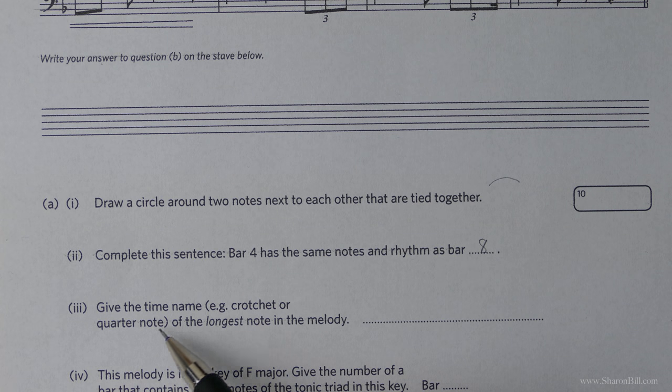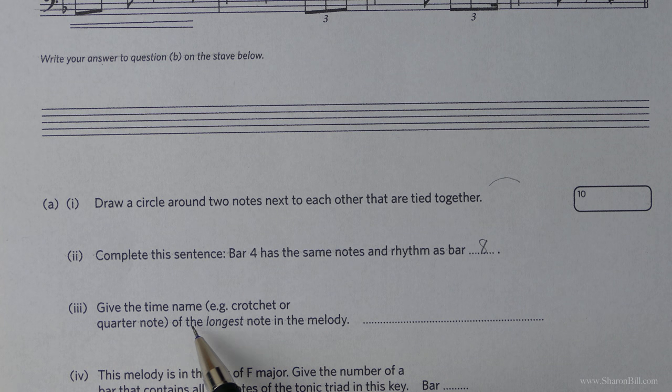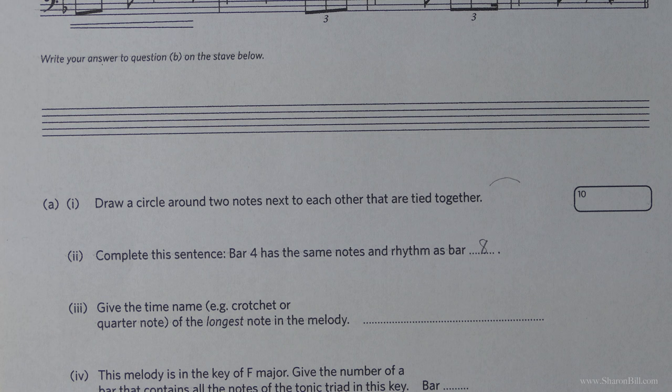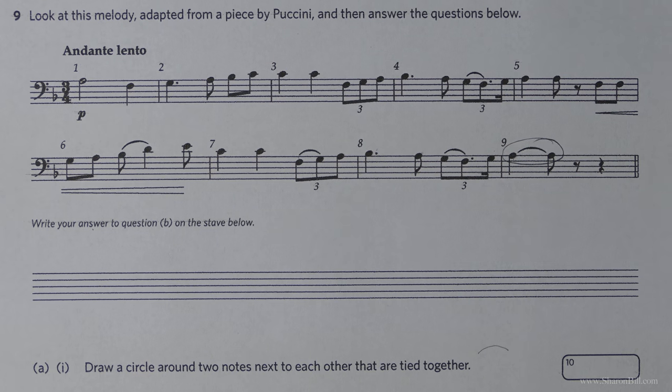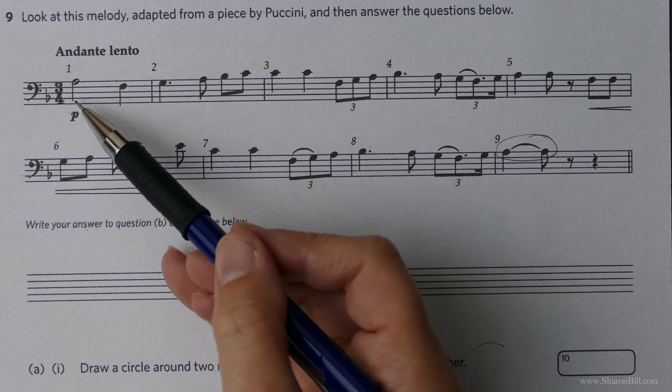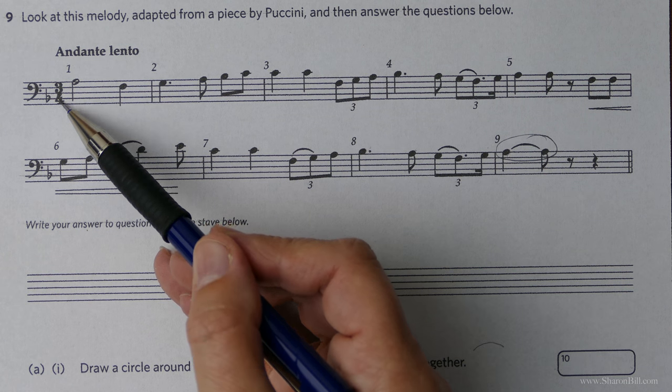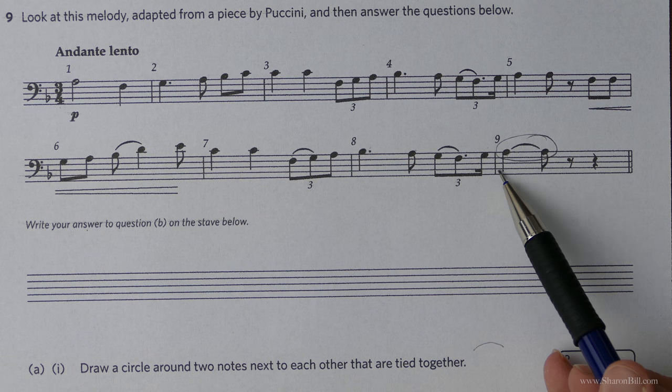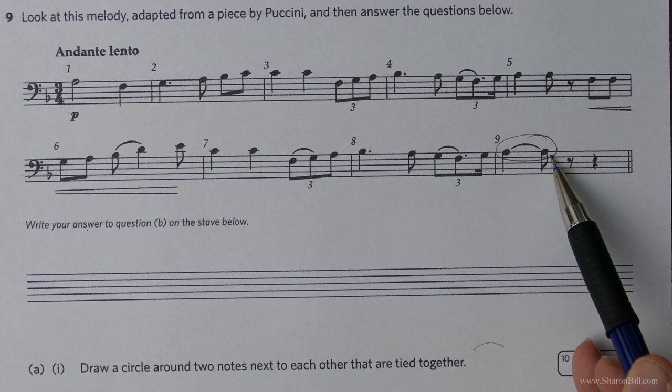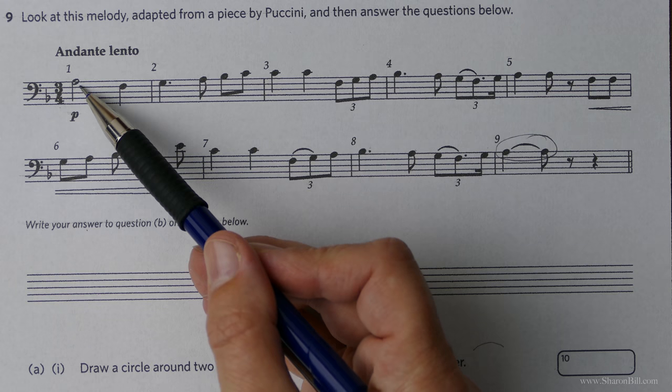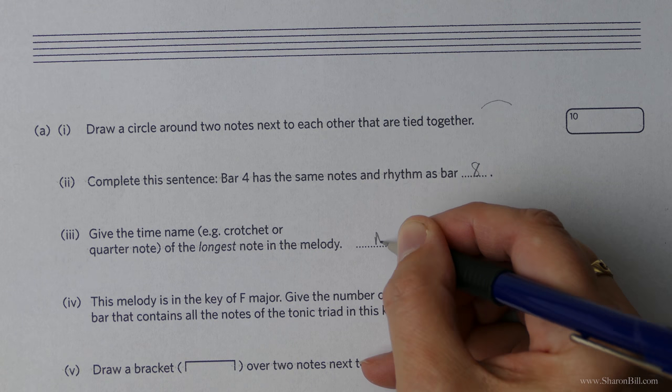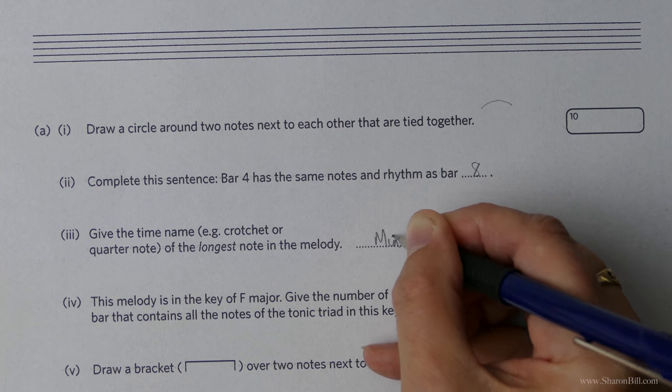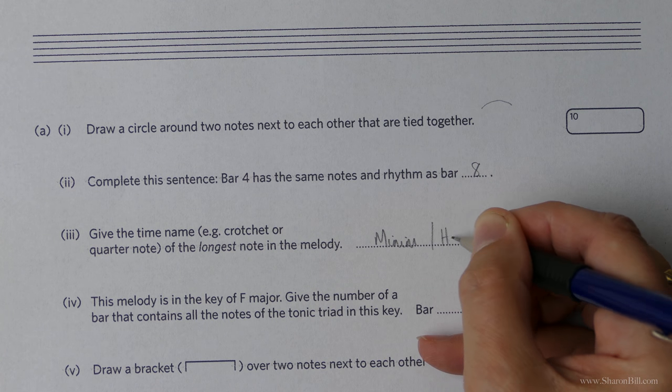So a bit of description now. We need to give the time name of the longest note in the melody. So right at the very beginning actually is our longest note. That's worth two beats. This one here is only worth one and a half even though it's tied. This is the longest so we could either say minim or if you prefer the alternative terms you could say half note.